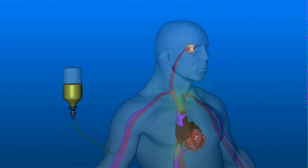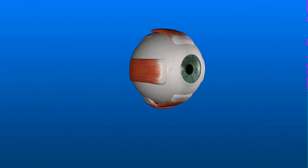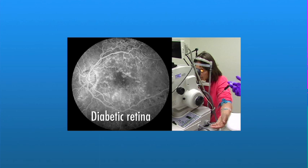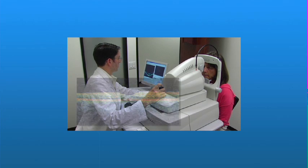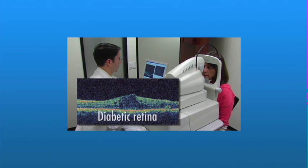With fluorescein angiography, a small amount of yellow dye is injected into your arm, where it circulates through all the blood vessels in the body, including those in the retina. A special camera with a blue flash is then used to take a series of pictures of the retina. Any blood vessels affected by NPDR will show up in these images, as well as areas of abnormal leakage or ischemia. The images show the ophthalmologist if any blood vessels are leaking, how much leakage there is, and if any blood vessels are closed. With OCT, a special camera is used to photograph your retina. It measures the thickness of the retina and is also very sensitive at detecting swelling and fluid. This diagnostic information helps your doctor determine why your vision is blurred and whether treatment should be started.